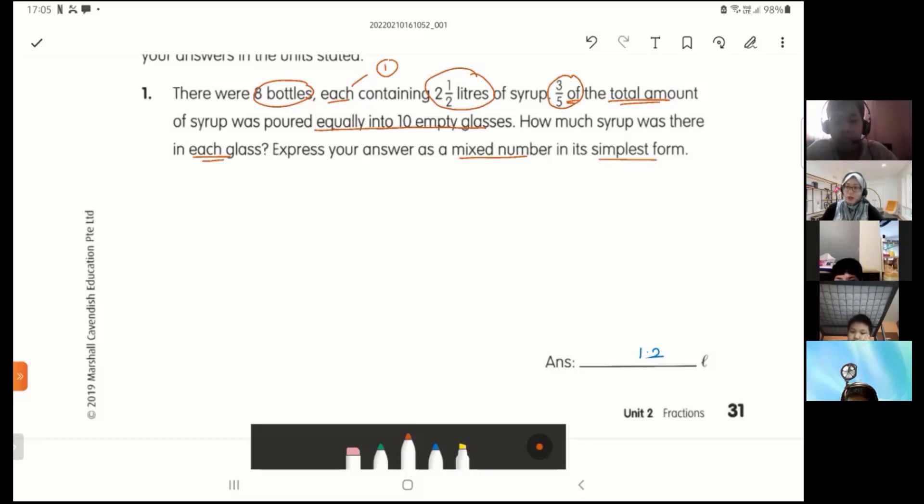Express your answer as a mixed number in its simplest form. So if you look at Jamal's answer just now, he said 1.2 liters as decimal. This is not mixed number, so definitely this is wrong. Let's go through step by step first.